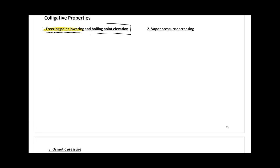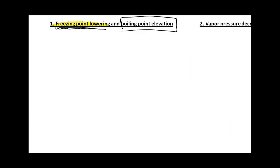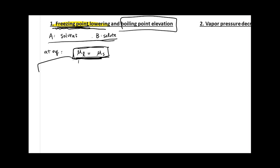I'm going to use the freezing point lowering as an example, and then you will need to derive the others by yourself. When we talk about the freezing point, let me define a few terms. Component A is your solvent, component B is your solute. At equilibrium, we can always write that mu liquid equals mu solid, assuming today we have an ideal solution.